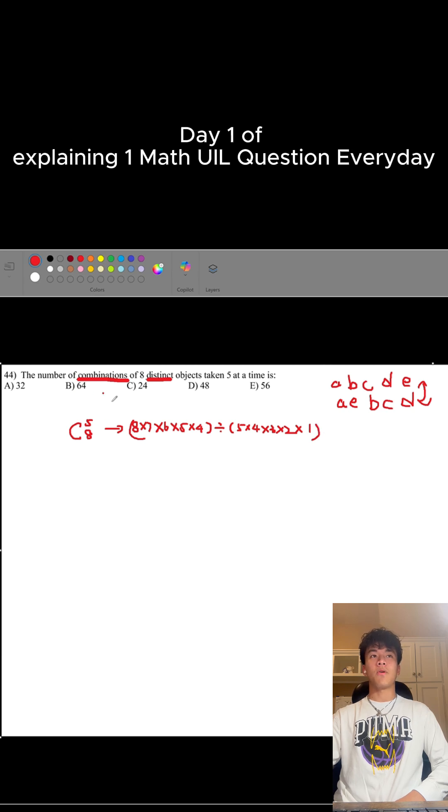Every time you see this type of question, you can use this formula to help you find the amount of combinations. This gives us a total of 56, which is choice E. And that's how you do combination problems.